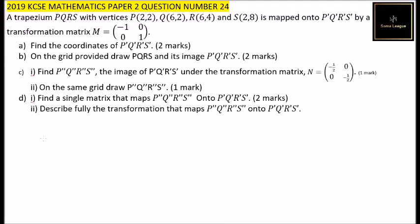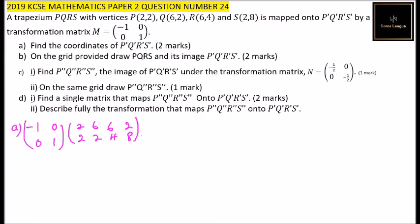We'll start with part A. Because we are given the transformation matrix M and the coordinates of PQRS, what we normally do is multiply the matrix [-1, 0; 0, 1] by the matrix formed by the coordinates of our object. So that is: P(2,2), Q(6,2), R(6,4), and S(2,8).